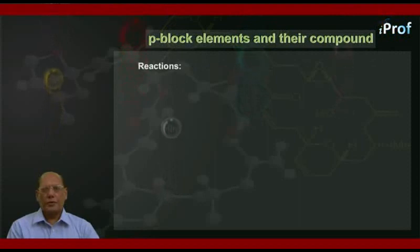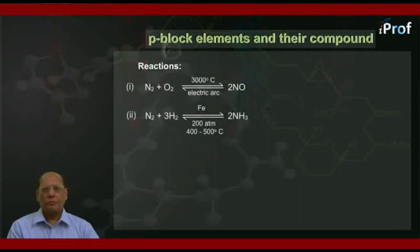Reactions: Number 1, N2 plus O2 at 3000 degrees Celsius in presence of electric arc combine to give nitric oxide, 2NO.